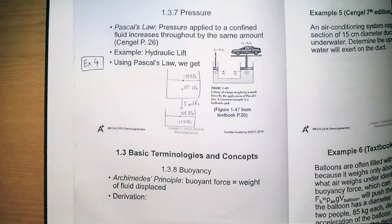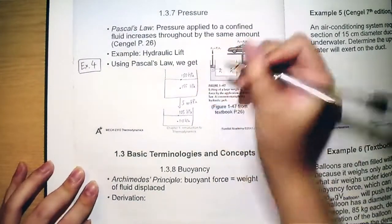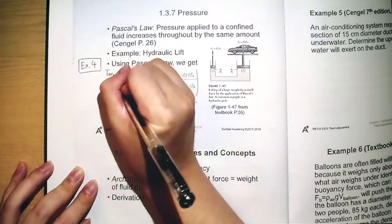Suppose a force F1 is exerted on cylinder one, and the force F2 is given out at cylinder two, then we can use Pascal's law to determine the ratio. Let me write that down, the ratio.